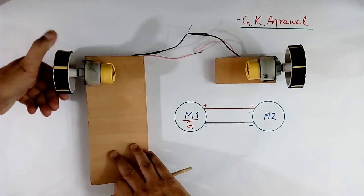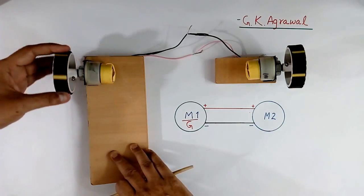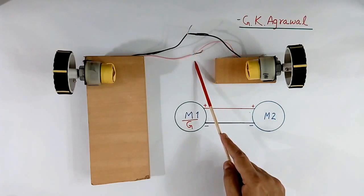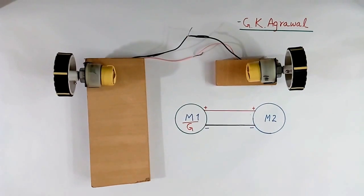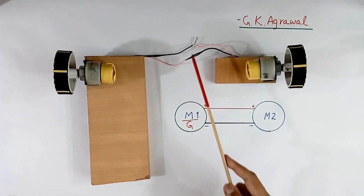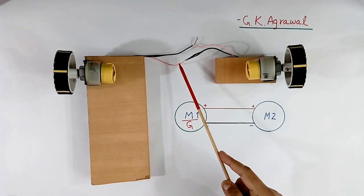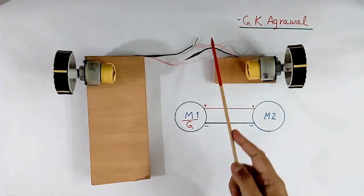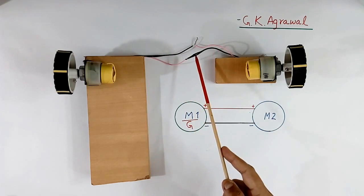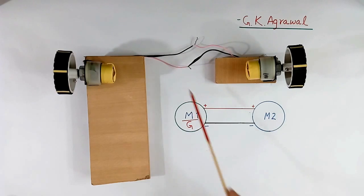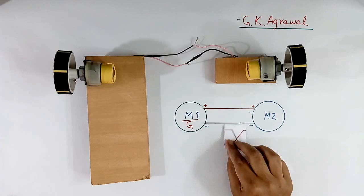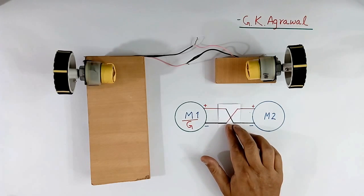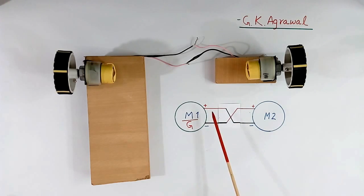See, now I will reverse the connection. I will show you the connection. First, this wire is pink, black and black. Now we will change the connection. The red wire is black and pink wire is black.